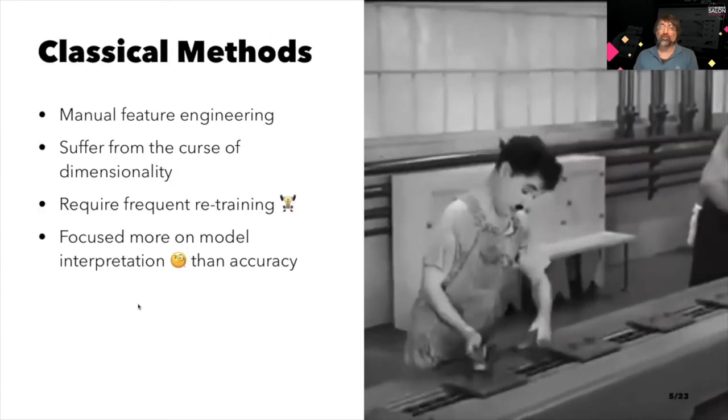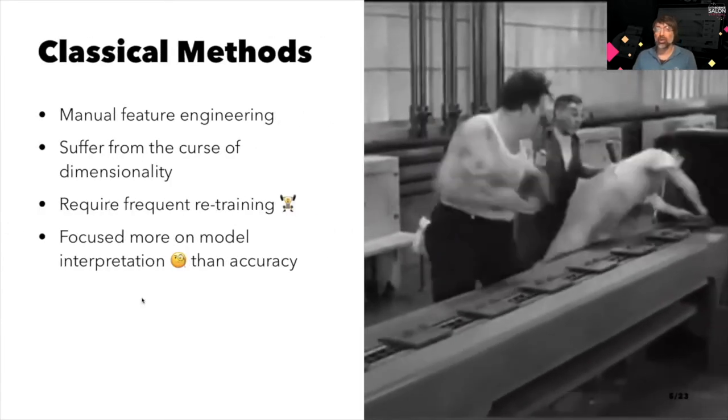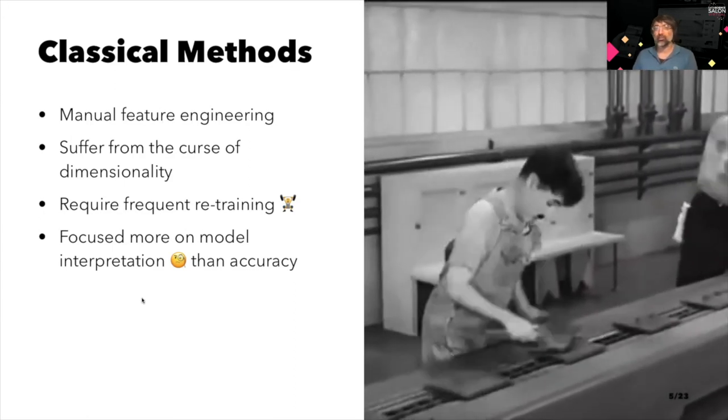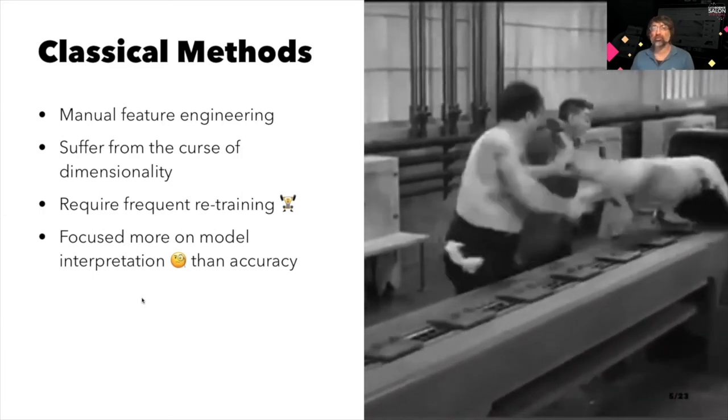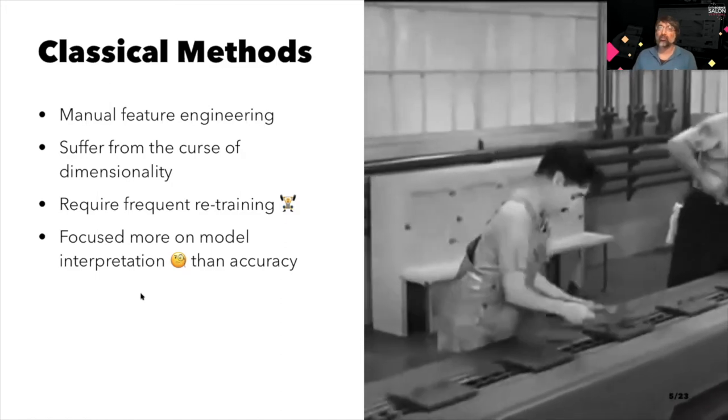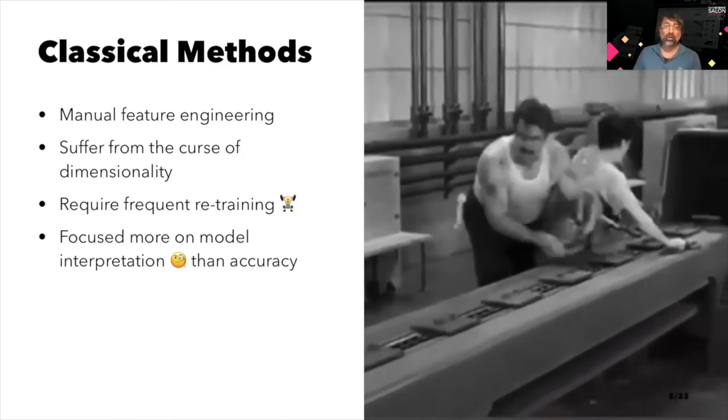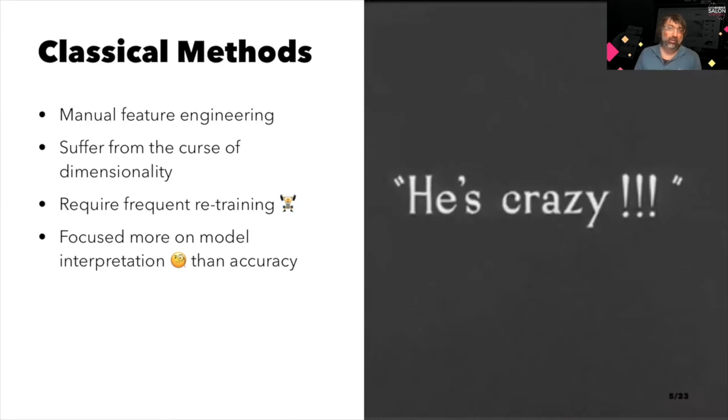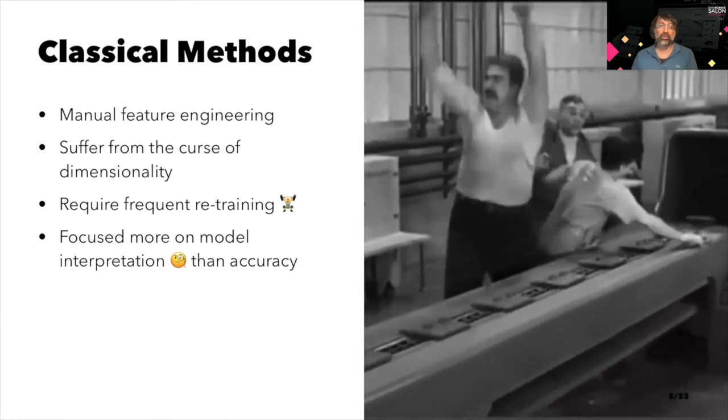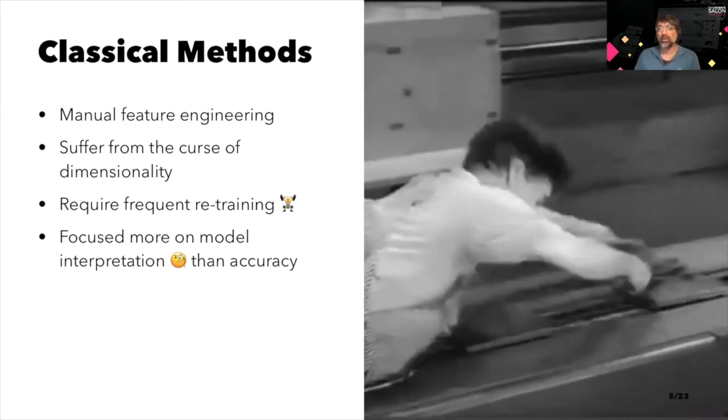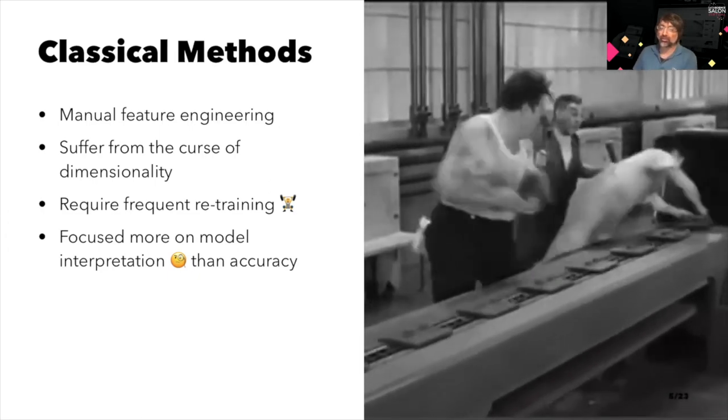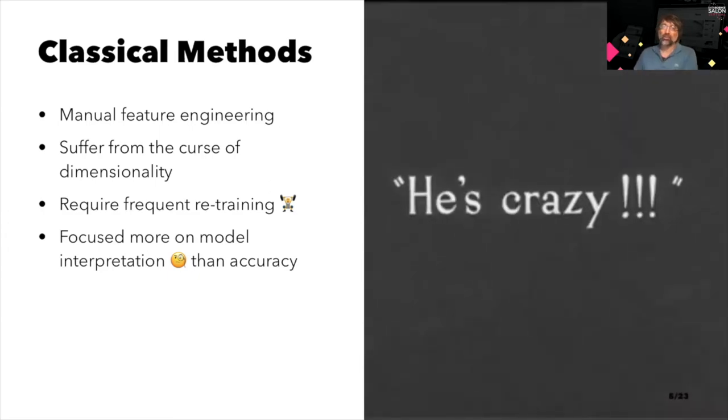Classical time series forecasting methods rely on the ARMA method and its variants like ARIMA. Apart from the fact that these methods require manual feature engineering, they also suffer from the curse of dimensionality. They require frequent retraining and are focused more on model interpretation rather than test set accuracy. Typically, in the classical setting, one trains a model for each individual time series which can become computationally inefficient when dealing with, say, millions of time series. As is the trend these days when dealing with such a situation, we can turn to deep learning methods.